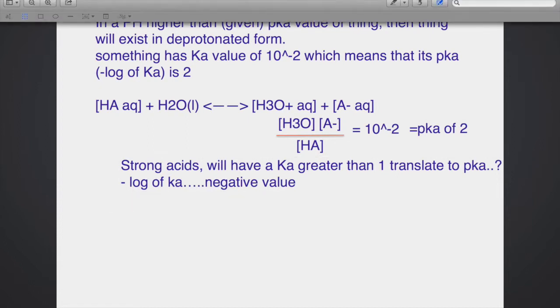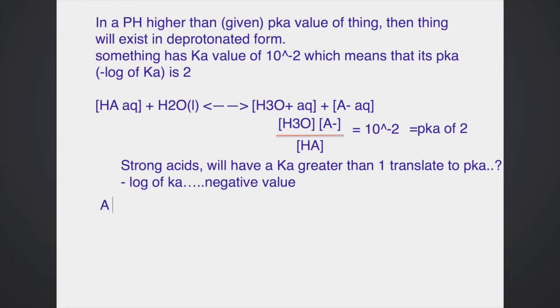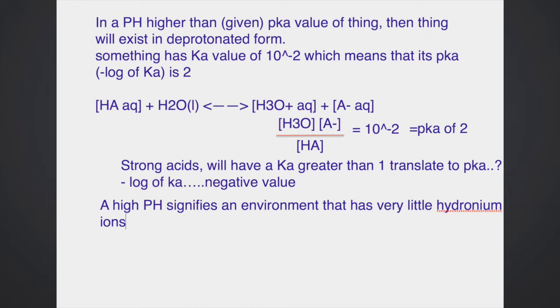What does a higher pH mean? A high pH signifies an environment that has very little hydronium ions, right? The pH is high, therefore there's very little hydronium ions, and let's just analyze that a little further. Example.